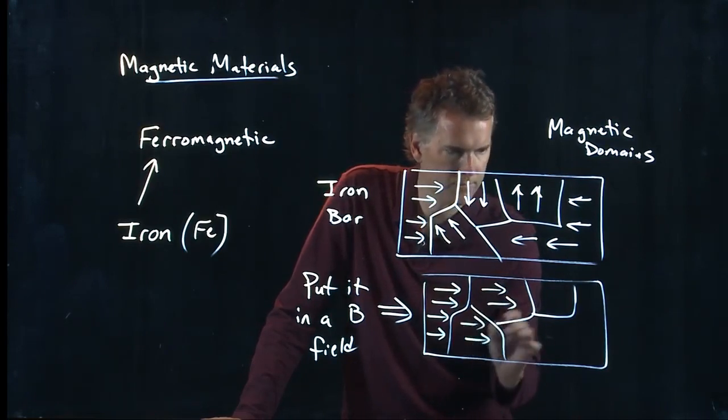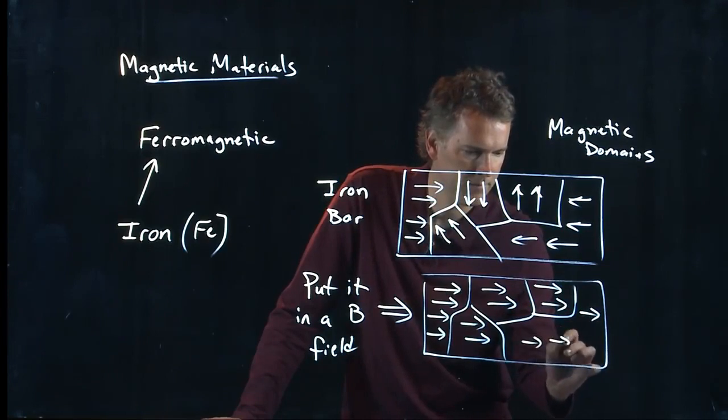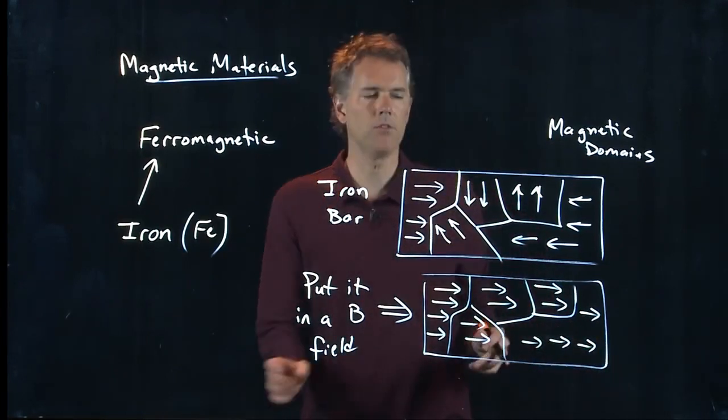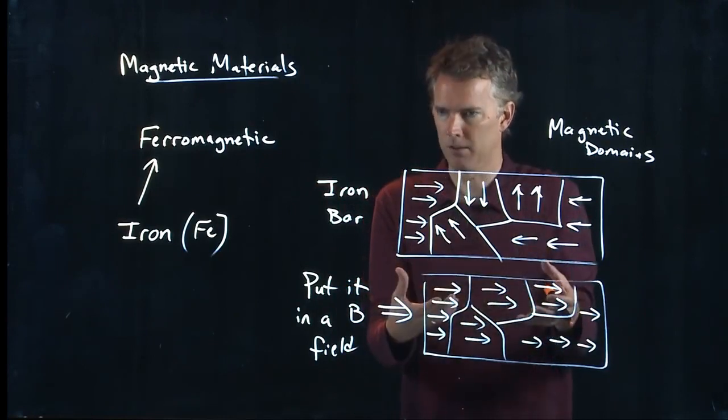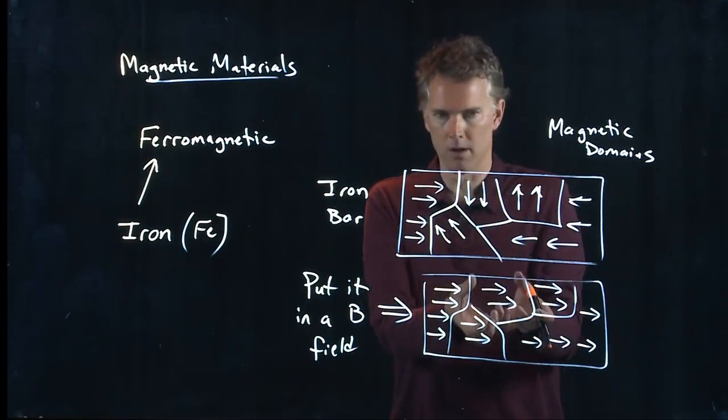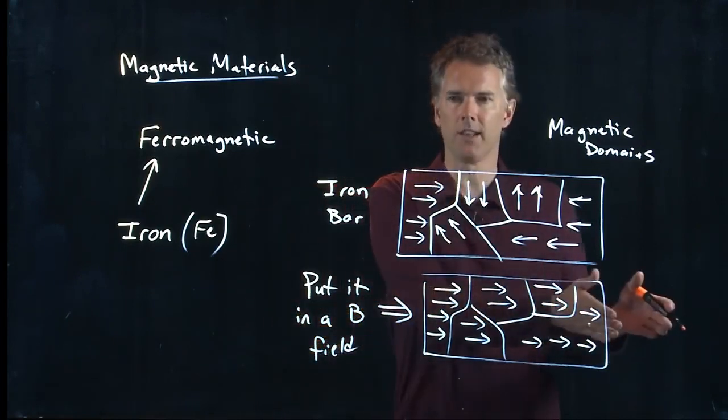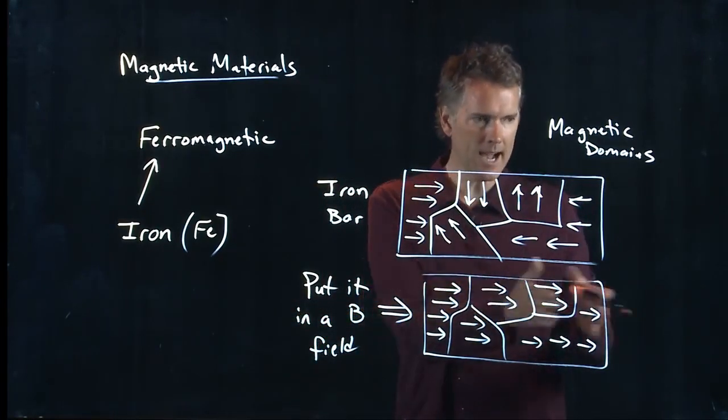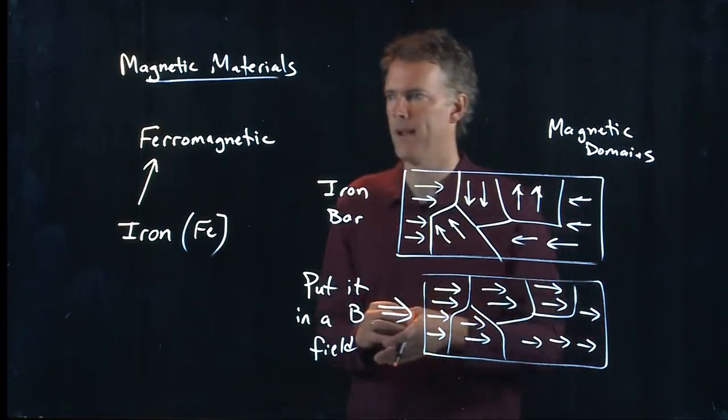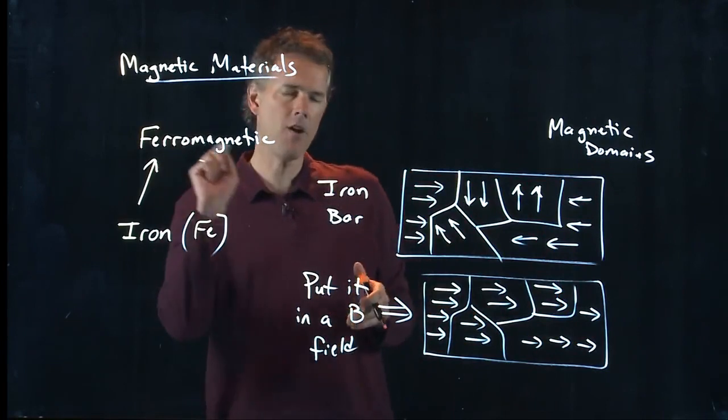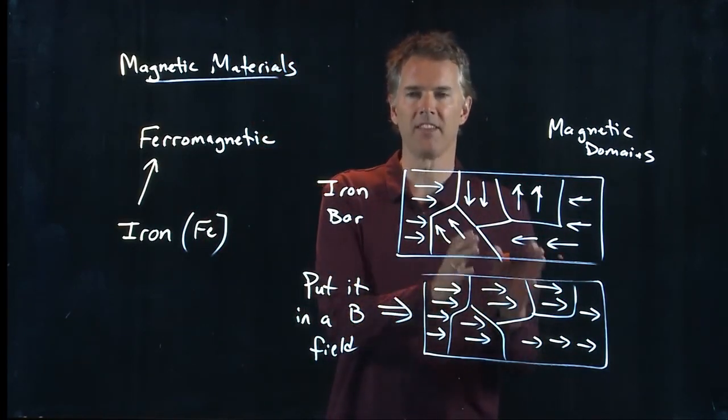These are microscopic domains, you're talking about micron-size chunks of iron. But if I put it in a B field they start to line up. You can align all those dipoles in your magnetic material, and ferromagnetism means when I take off the B field they stay there. They will stay in that orientation.